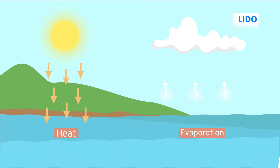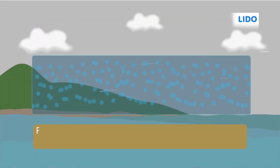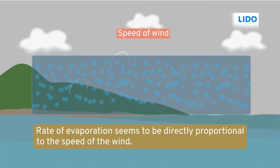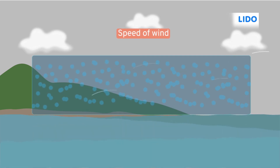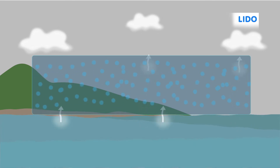Speaking about factors, next time you sweat, you will observe that it dries faster when the fan is switched to its highest speed. The rate of evaporation seems to be directly proportional to the speed of the wind, which means that the evaporation rate increases with an increase in wind speed. This happens because when the wind blows past us, the particles of water move away with the wind, decreasing the water vapor in the surroundings and as a result, evaporation increases to compensate for the water vapor content in the air.